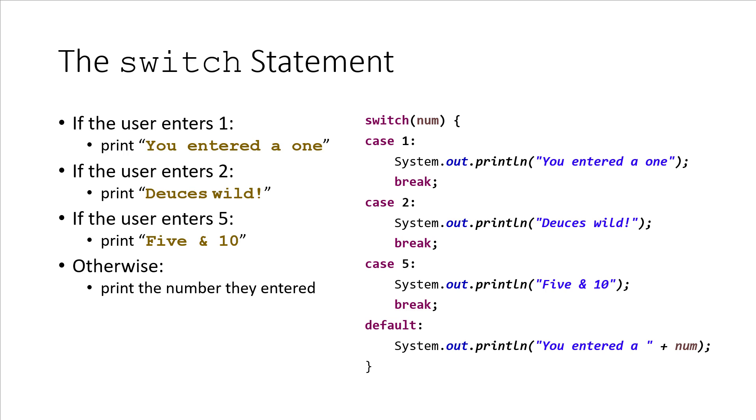Now another way to do this would be with a switch statement. Here, we switch on the variable, and then we add a case for each of our conditional statements. In the case that num is equal to 1, we say 'You entered a 1'. In the case that num is equal to 2, we say 'Deuces wild'. In the case that num is equal to 5, we print 'Five and 10'. And then to handle the otherwise case in a switch, we use a default.